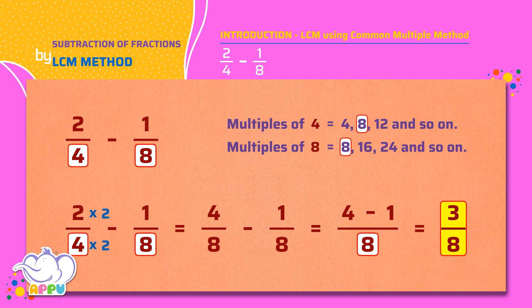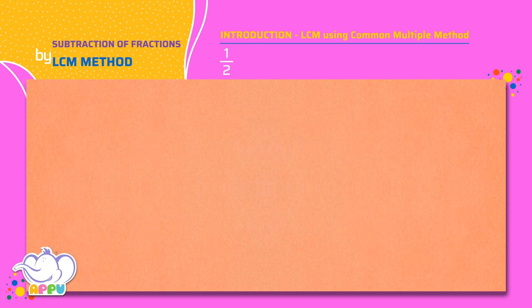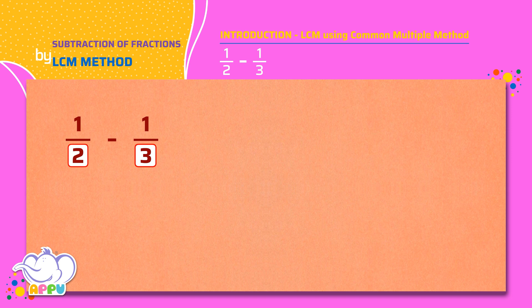Let's look at another example: 1 by 2 minus 1 by 3. We see that the denominators are not the same for both the fractions. Let's make the denominator the same by finding common multiples of the denominators 2 and 3.